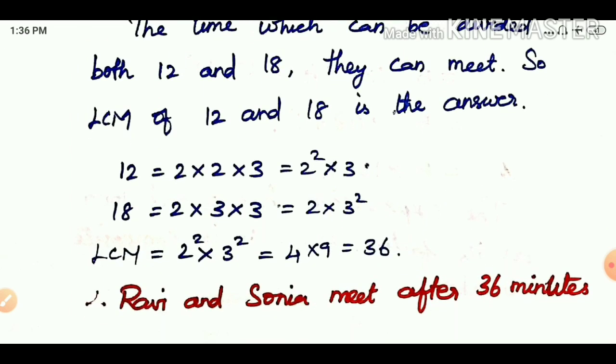Let's find LCM of 12 and 18. Splitting into prime factors: 12 = 2×2×3 = 2²×3, and 18 = 2×3×3 = 2×3². The highest power of 2 is 2², highest power of 3 is 3². So LCM = 2²×3² = 4×9 = 36. Therefore, Ravi and Sonia will meet at the starting point after 36 minutes.